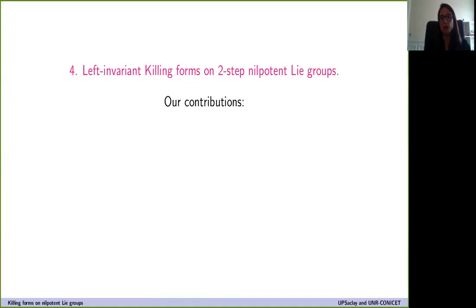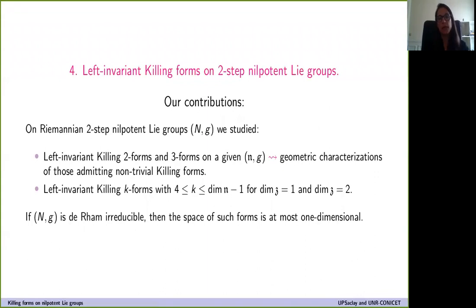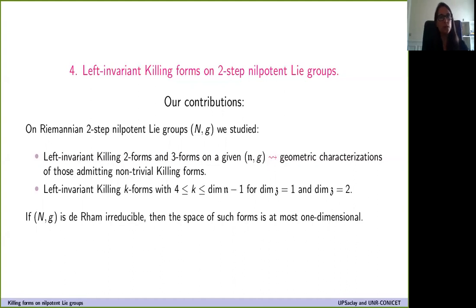These are all the killing forms on nilpotent groups that were known when we started working. Let me now tell you about our contributions to the study of killing forms. We restricted ourselves to two-step nilpotent groups. What we obtain is: first, a characterization of the Lie groups admitting either killing two-forms or three-forms; and second, for higher degree killing forms, we restricted to the case where the center has dimension at most two. In both cases, whenever the Lie group is de Rham irreducible, the space of killing forms is at most one-dimensional.